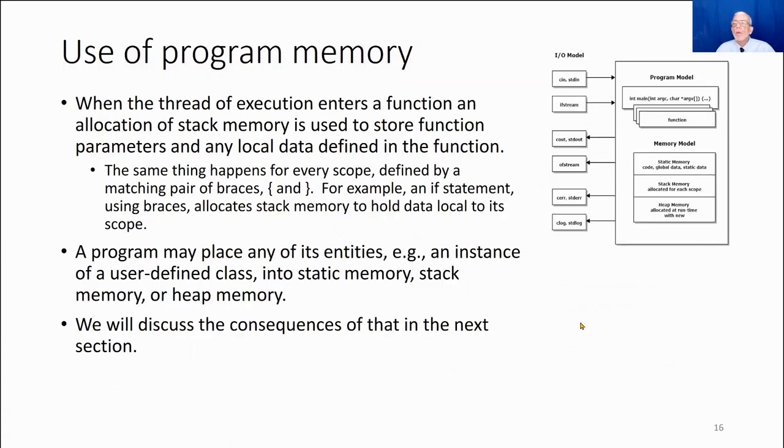So here's program memory. So when the thread of execution enters a function, we allocate stack memory. Same thing happens for every scope. Program may place any of its entities, an instance of a user-defined class, into static memory, stack memory, or heap memory. We've already described how that happens. And in the next model, we'll describe the consequences of that placement.